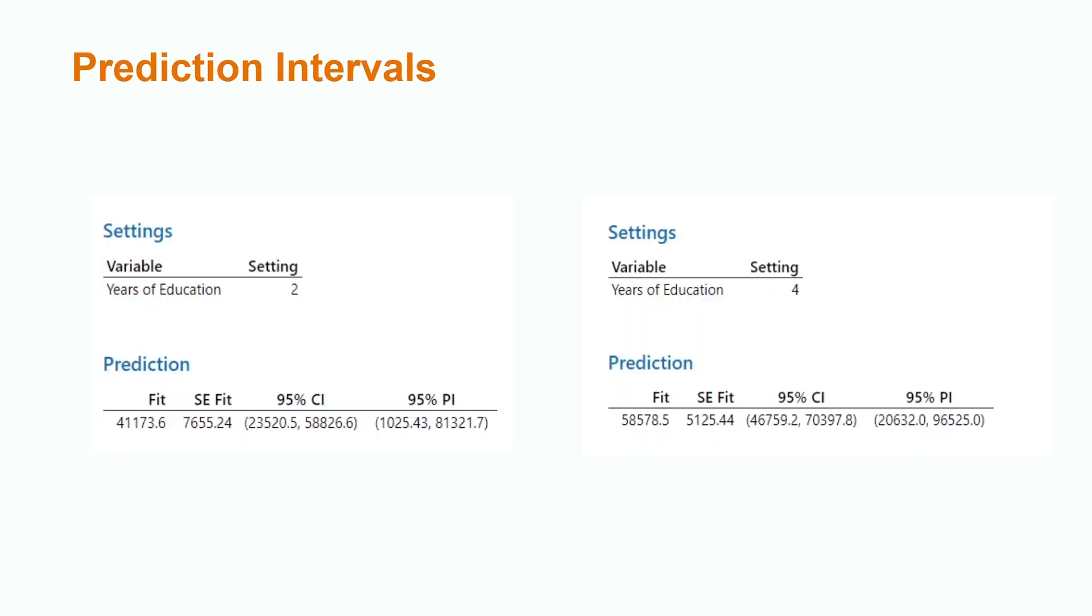Minitab gives us an output for both our prediction and confidence intervals for the x values 2 and 4. The 95% prediction interval shows us that if we randomly select someone with two years of education past high school, we can expect with 95% confidence that they earn between $20,632 and $96,525. For someone with four years of education past high school, we can expect with 95% confidence that they earn between $20,632 and $96,525.